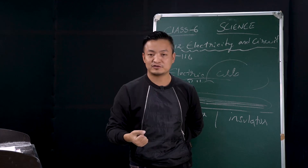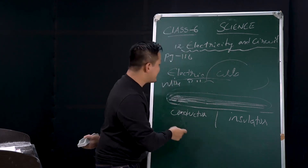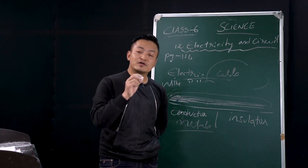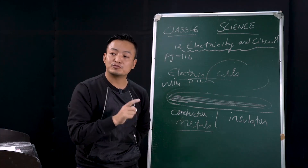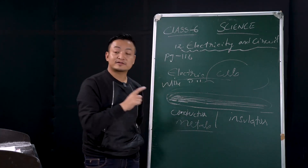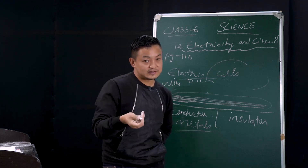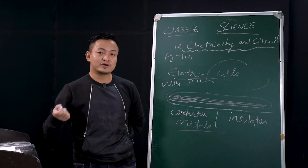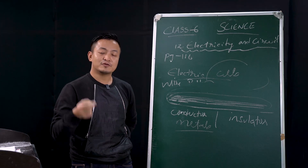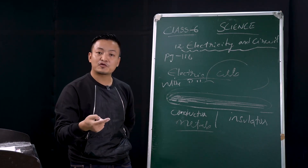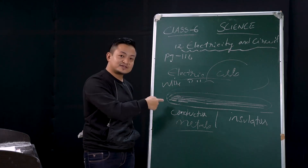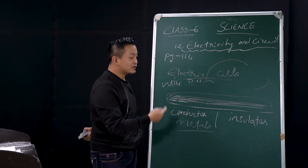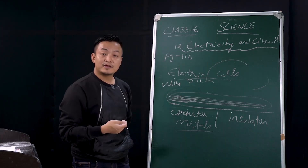That's why wires are covered with plastic — plastic is not a good conductor of electricity. Wood is also not a good conductor. Metal, on the other hand, is a very good conductor. So: conductor — material where current flows; insulator — material where current does not flow.